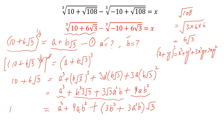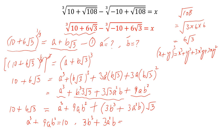Now we compare both sides. From 10 plus 6√3, comparing rational and irrational parts, we get: A³ + 9AB² = 10, and 3B³ + 3A²B = 6.